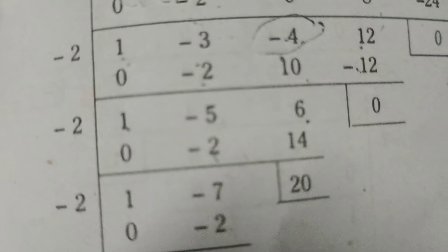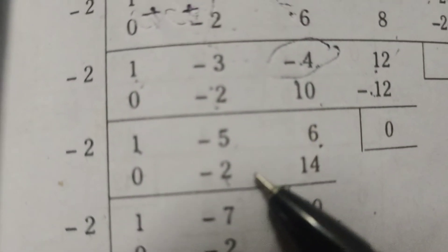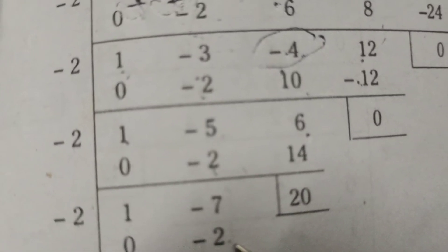Here, 1 plus 0, here -7, plus 14, 20. Again, here 0, 1 plus 0, 1, 1 into -2, -2, -7, -2 means -9.